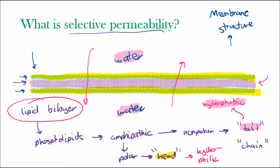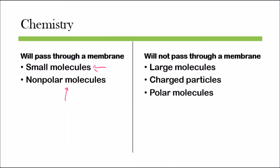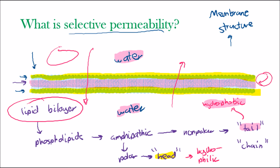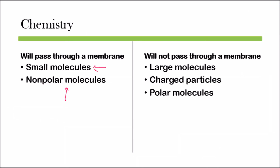Small molecules can pass because the phospholipids are so closely bunched together that a large molecule just can't fit. And non-polar molecules can pass because, although we have a hydrophobic region in the middle, a polar molecule is not going to be able to pass through that hydrophobic region. Examples of molecules that can pass are CO2 — carbon dioxide, which is relatively small and non-polar — and O2, oxygen, which is also a small and non-polar molecule.